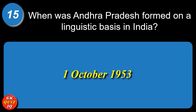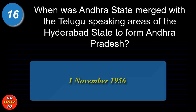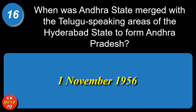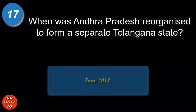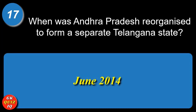When was Andhra Pradesh formed on a linguistic basis in India? 1st October 1953. When was Andhra state merged with the Telugu-speaking areas of the Hyderabad state to form Andhra Pradesh? 1st November 1956. When was Andhra Pradesh reorganized to form a separate Telangana state? June 2014.